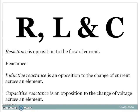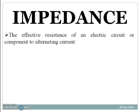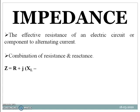The combination of all three — resistance and reactance — is called impedance. Impedance is the effective resistance of an electrical circuit or component to alternating current. Mathematically, Z is equal to R plus jX_L minus X_C, or Z is equal to R plus or minus jX.